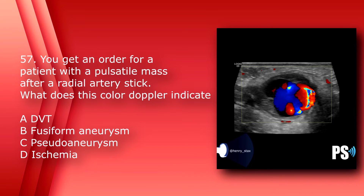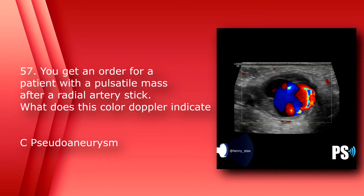Number 57: You get an order for a patient with a pulsatile mass after a radial artery stick. What does this color Doppler indicate? A) DVT, B) fusiform aneurysm, C) pseudoaneurysm, or D) ischemia. The answer is C, pseudoaneurysm. This color Doppler image is showing the classic yin-yang or Pepsi-Cola sign of a pseudoaneurysm.